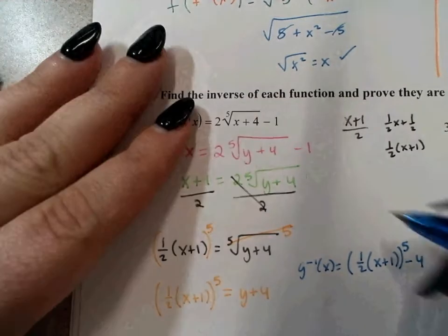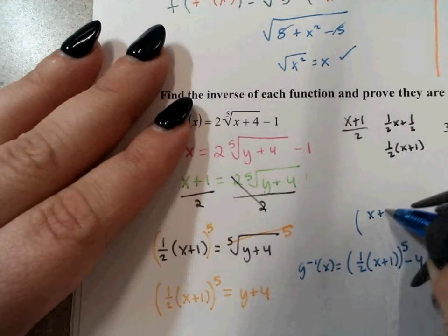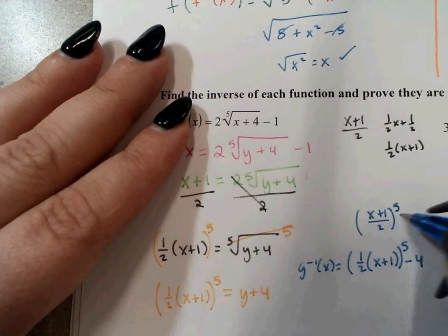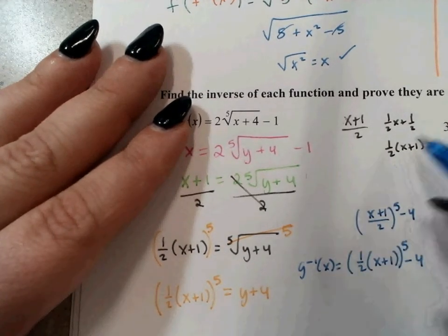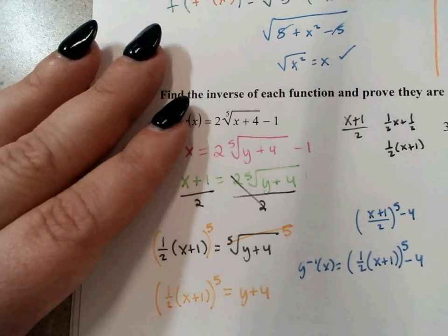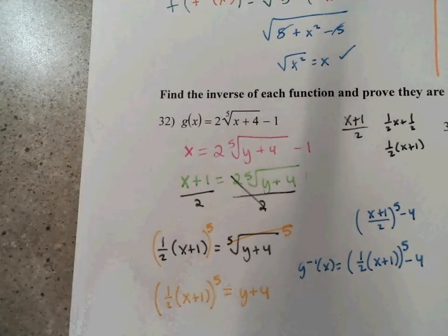Or equivalently, x plus 1 over 2, to the fifth power minus 4. Or 1 half x plus 1 half on the interior — plus 1 half, I mean. Any of these equivalent forms are acceptable.